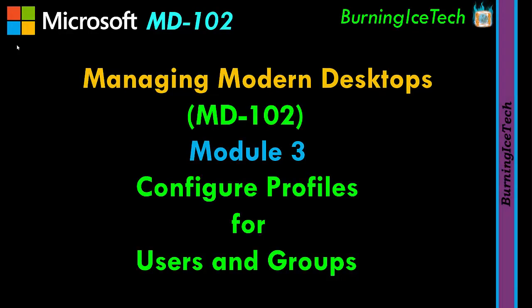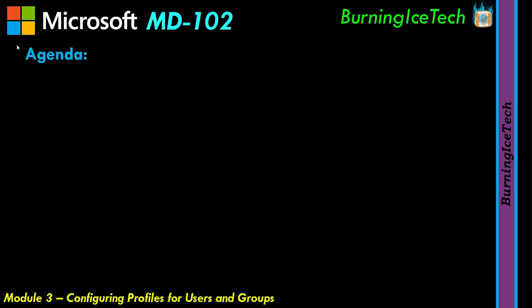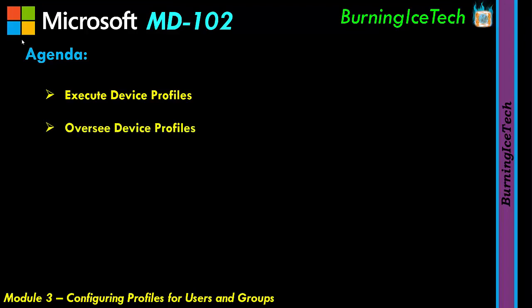Welcome to module 3 of the Microsoft MD 102 course. This module is called Configuring Profiles for Users and Groups, and it consists of three sections: Execute Device Profiles, Oversee Device Profiles, and Maintain User Profiles.